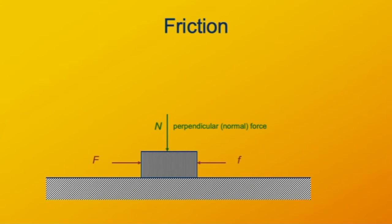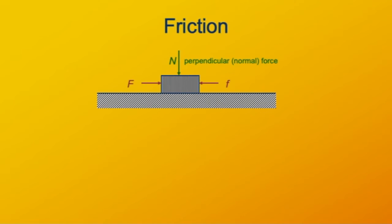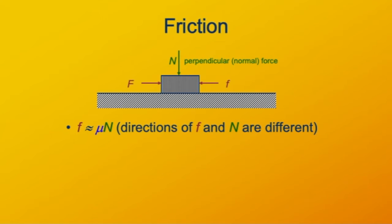Here's how we model the force of friction. It's a very complex force, but we're going to model it very simply. The force of friction is parallel to a surface. Imagine a block on a level surface with some force applied to the right — friction opposes that. The magnitude of the frictional force equals a constant mu times N, the magnitude of the perpendicular force.